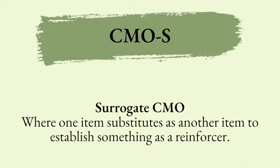The last CMO is the surrogate CMO, which is not used very often in clinical applications, but you need to know it for the test. The surrogate CMO is where one item substitutes for another to establish something as a reinforcer. Just know that it's one thing substituting for another because it might be on the exam. I'm Megan with Teach Me ABA, knocking out all of the most hated task list items on task list five. Like, share, and leave a comment if you have any questions.